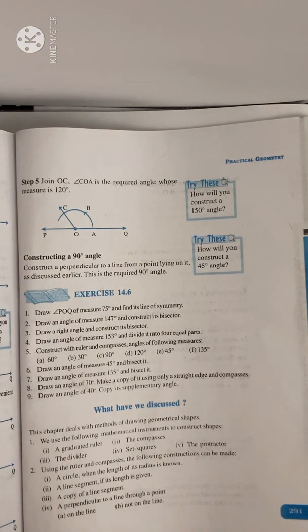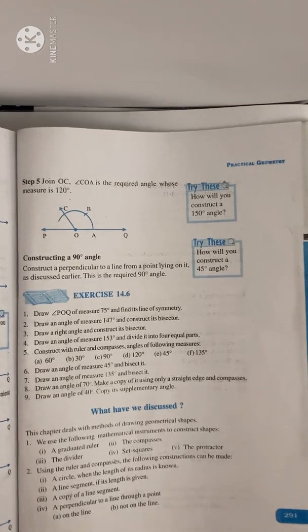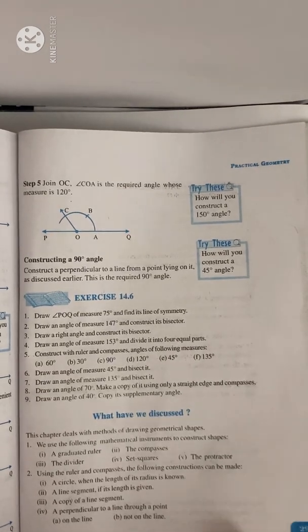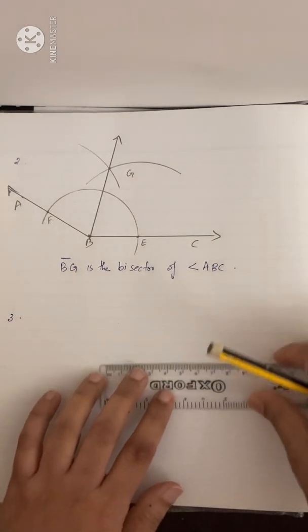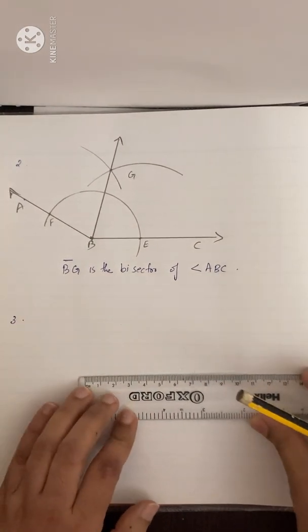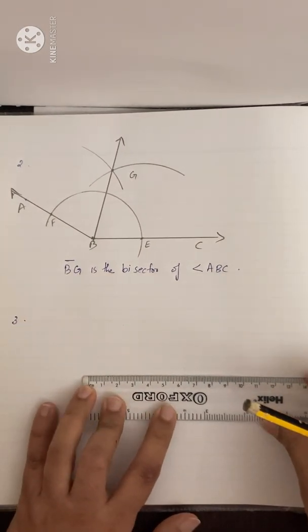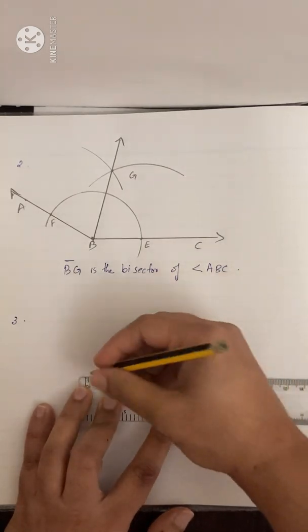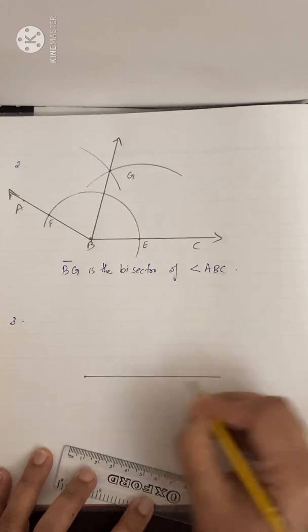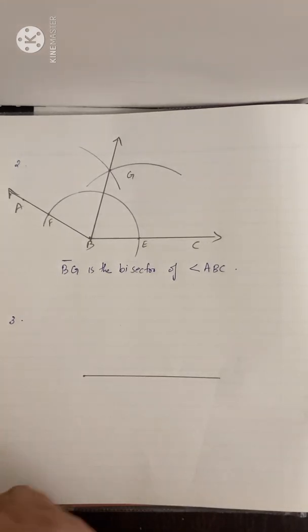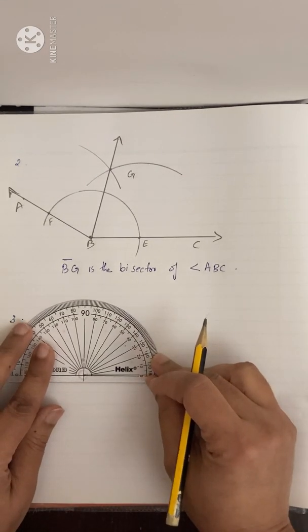Next question: draw a right angle and construct its bisector. Here I am going to construct the right angle using the protractor only — they have not asked us to do it with compass and ruler. So, same as the above questions, draw a line, mark a point, then measure 90 degrees.